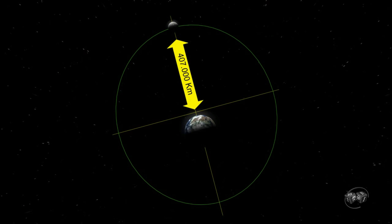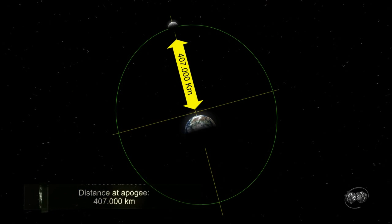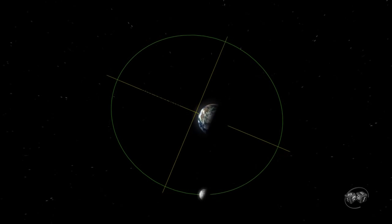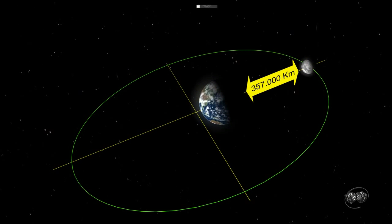Such that there is distance at apogee approximately 407,000 km, and distance at perigee equivalent to 357,000 km.